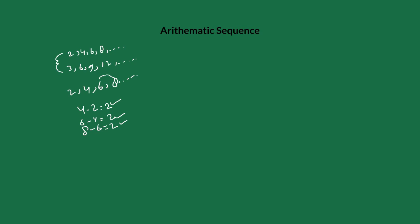If there is a common ratio for every two consecutive terms in a sequence, that is called a geometric sequence. For example, 3, 6, 12, and so on: 6 divided by 3 equals 2, that is the ratio. Also for the next two consecutive terms, 12 divided by 6 equals 2. So 2 is the ratio that is common for every two consecutive terms — that type of sequence is called a geometric sequence.